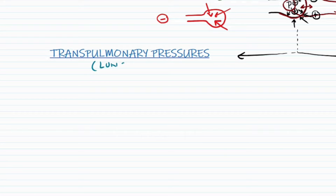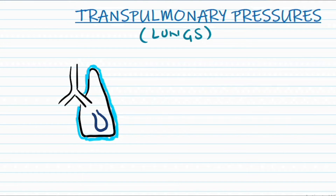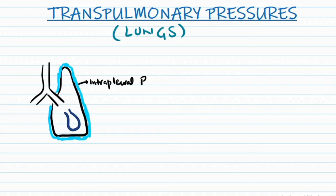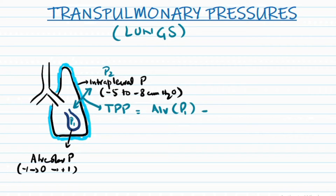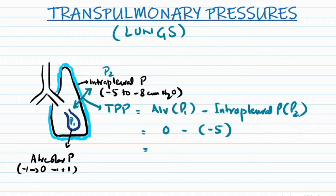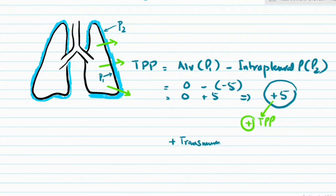In the lungs, trans-pulmonary pressure is the transmural pressure for the alveoli. The two pressures dictating alveolar collapse or expansion are alveolar pressure and intrapleural pressure. Intrapleural pressure ranges from minus 5 to minus 8 during the respiratory cycle, and alveolar pressure ranges from minus 1 to plus 1. The net trans-pulmonary pressure at end-expiration is plus 5, which is an inflating pressure directed from inside to outside, working against the elastic recoil of the lungs.